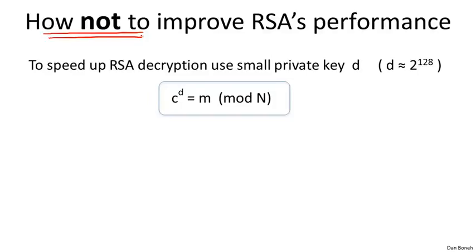You might think that if you wanted to speed up RSA decryption — remember, decryption is done by raising the ciphertext to the power of d, and exponentiation runs in linear time in log of d — why not just use a small d? Say a decryption exponent on the order of 2 to the 128. Normally the decryption exponent d would be as big as the modulus, say 2,000 bits. By using d that's only 128 bits, you basically speed up RSA decryption by a factor of 20. It turns out this is a terrible, terrible idea.